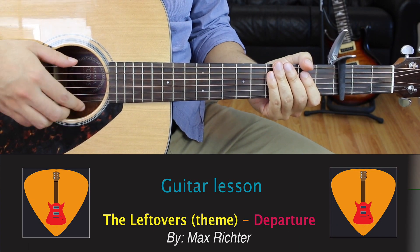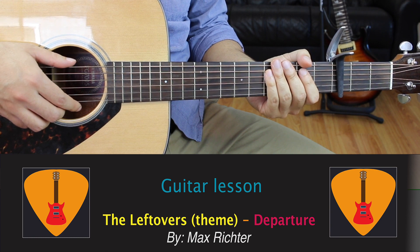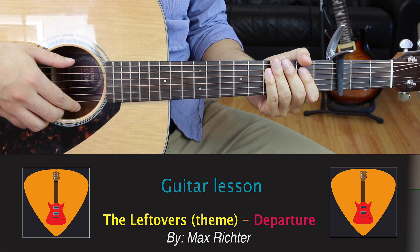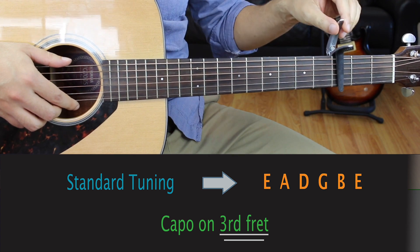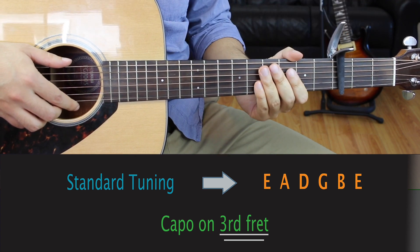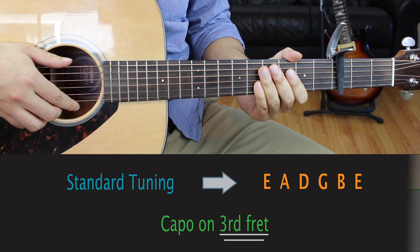Hey guys, how's it going? Brandon here. Today we'll be learning how to play Departure by Max Richter, which is one of the theme songs for HBO's The Leftovers. This beginner-friendly version is in standard tuning and uses a capo on the 3rd fret. I also want to mention that this is a fingerstyle song, so we'll be playing it without a guitar pick. Alright, let's take a closer look.